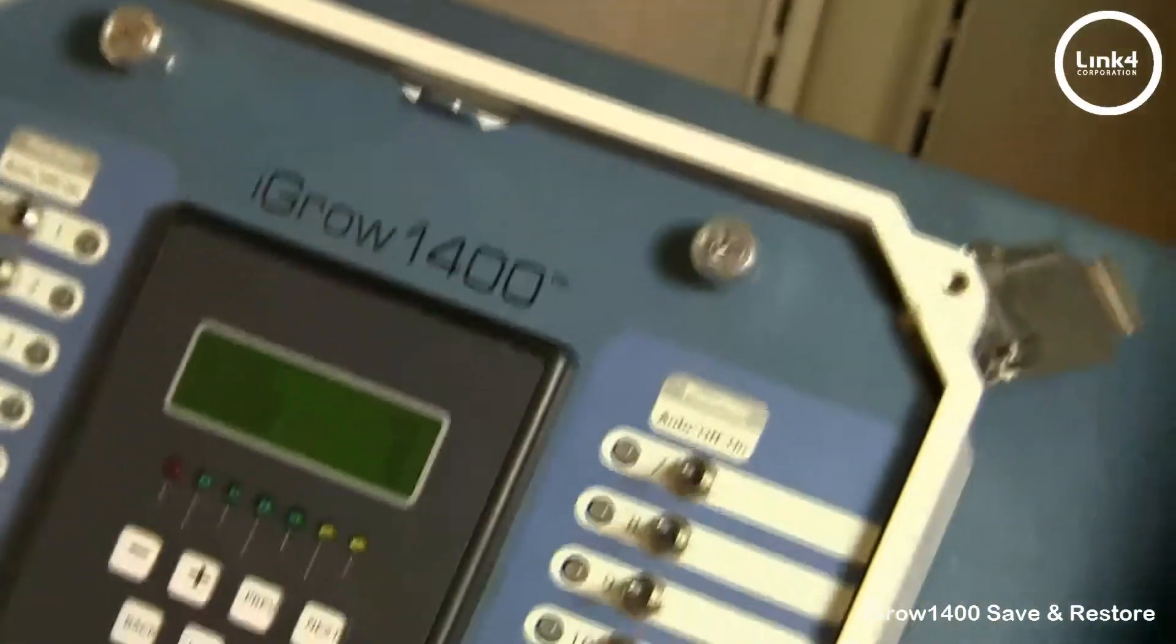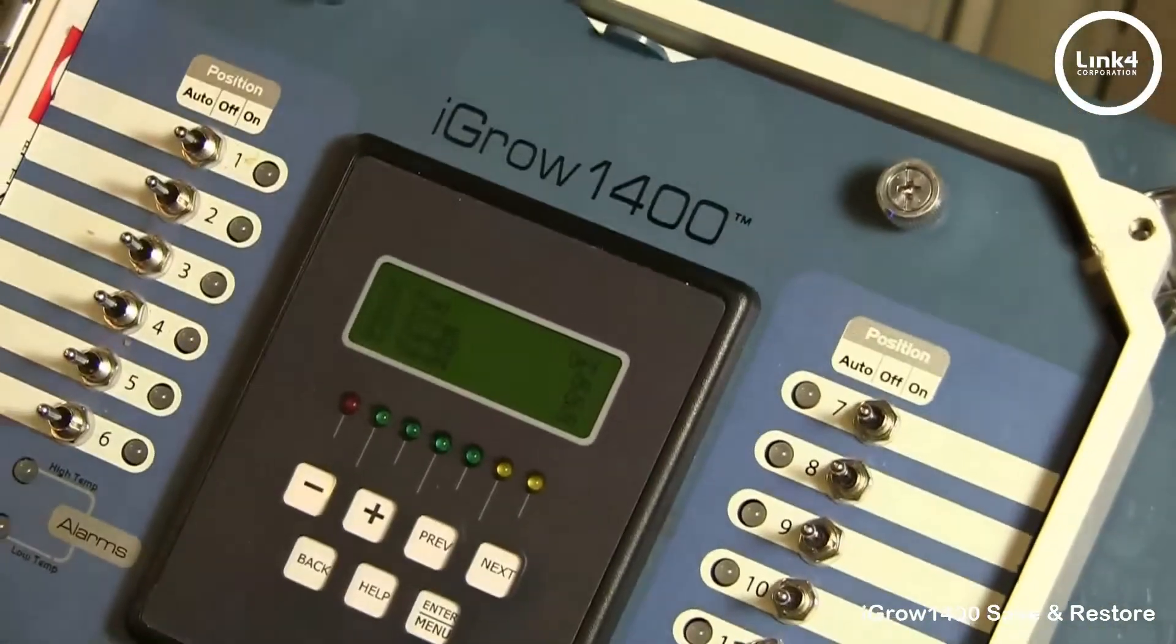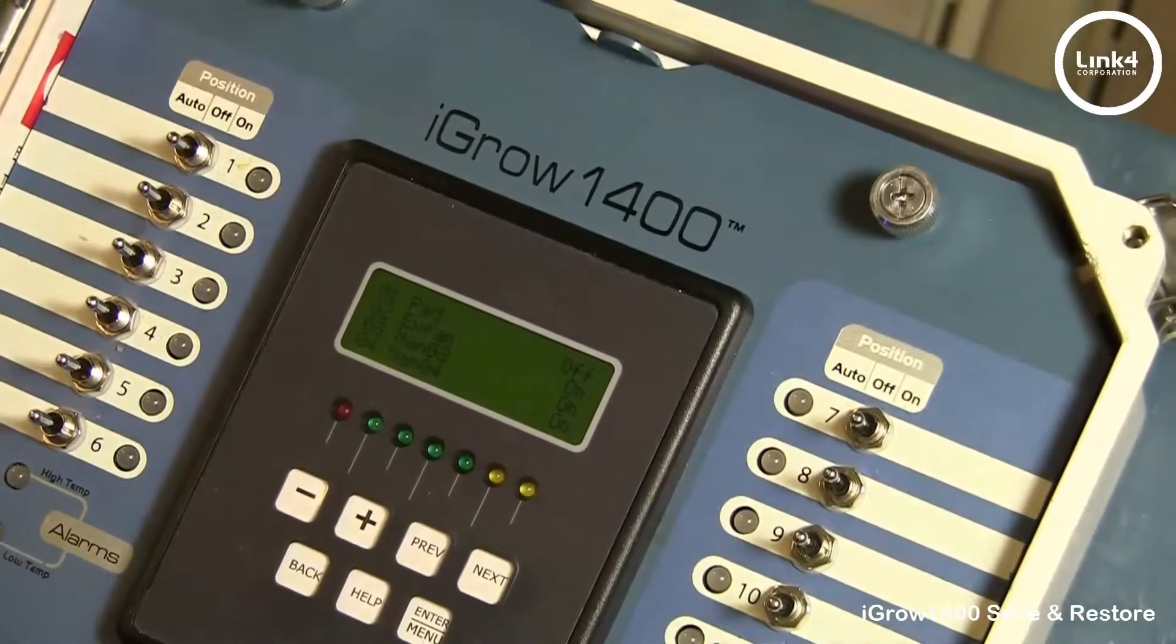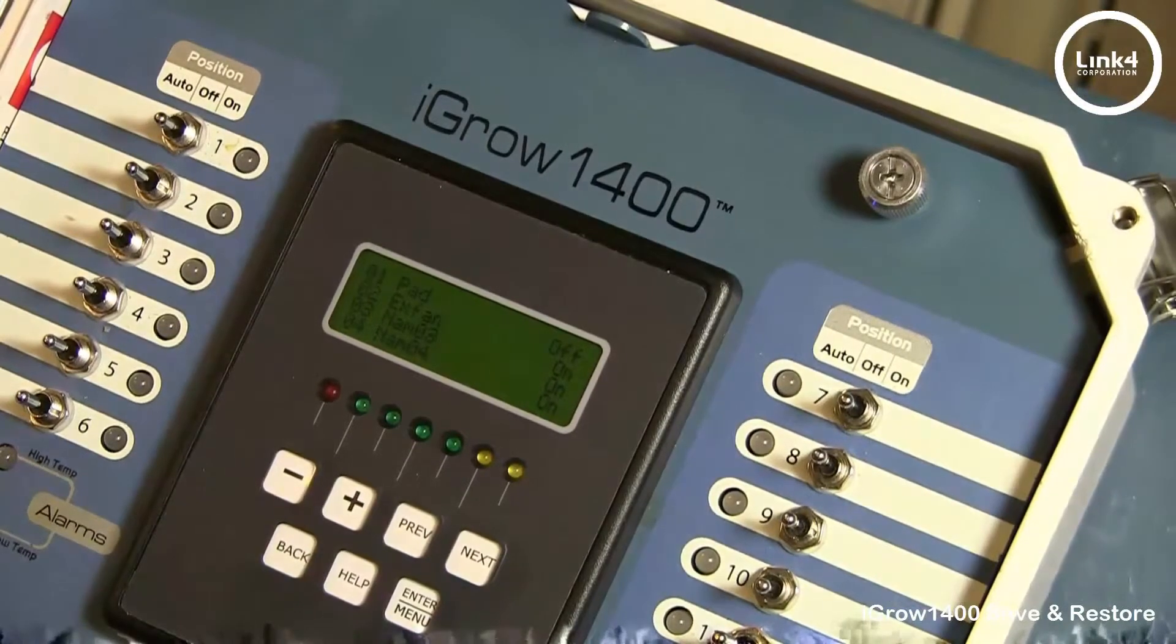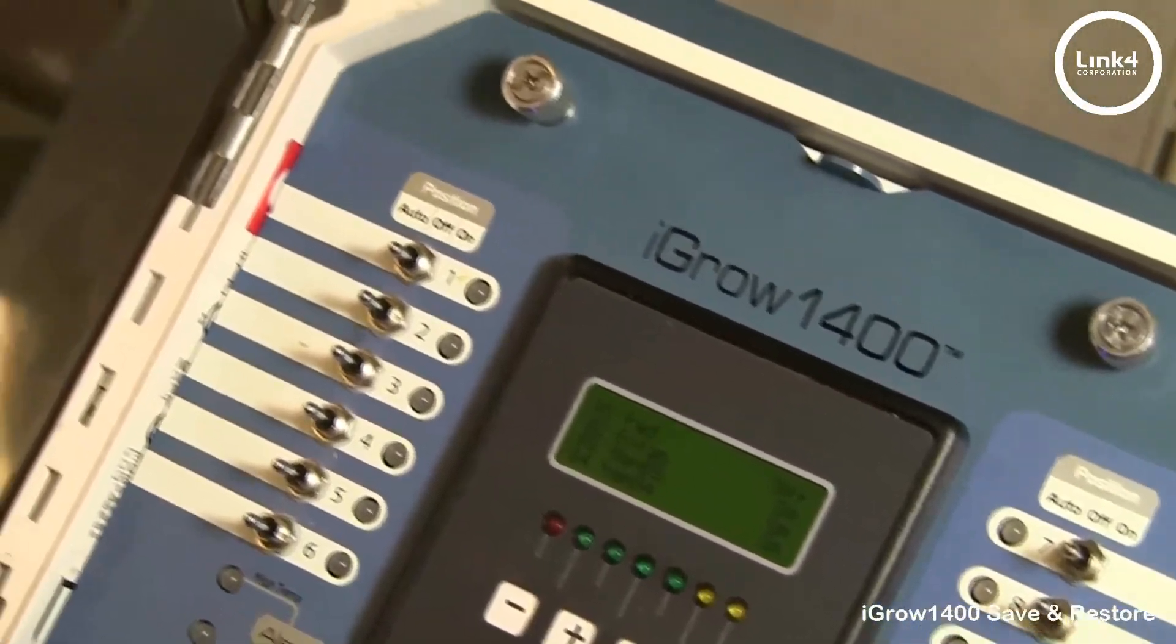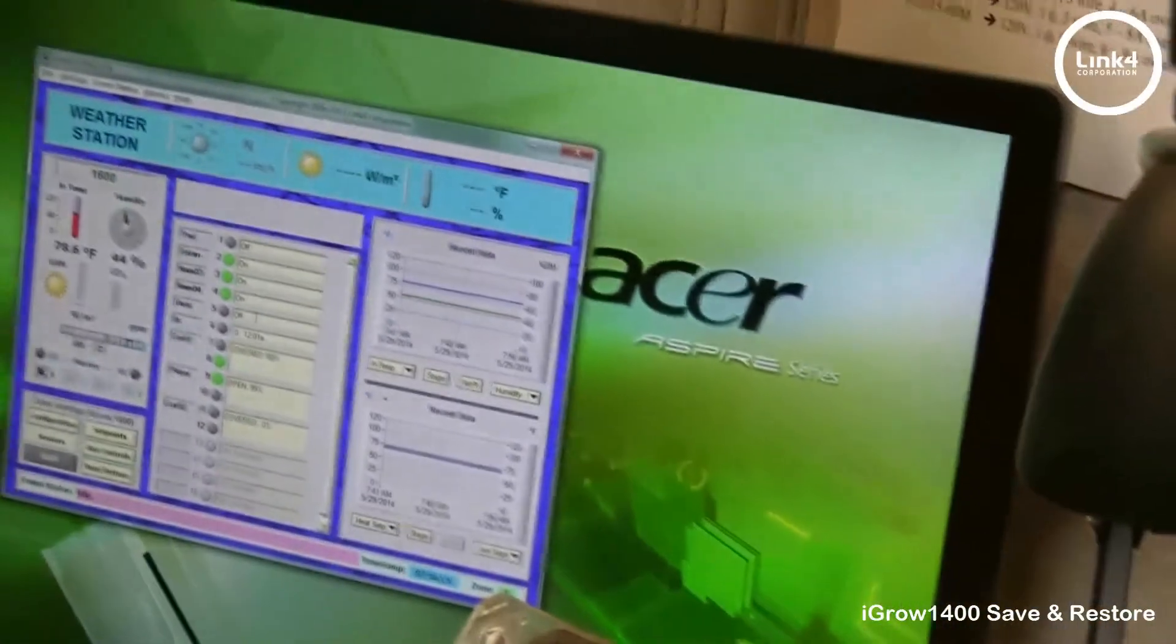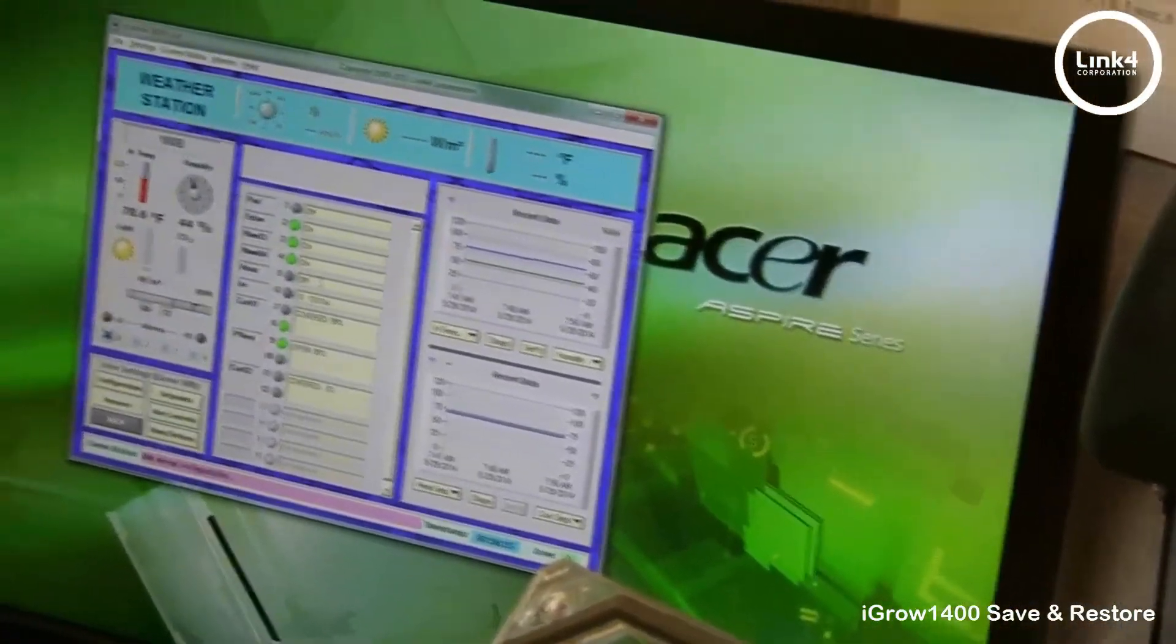And as you can see also, if we look back to the controller, the list of the controller automatically populated with the equipment that has been restored to this device. And that's our video in saving and restoring configurations with iControl.